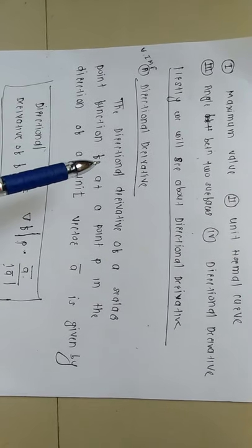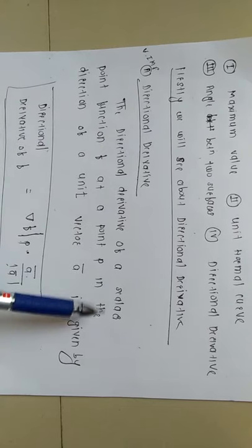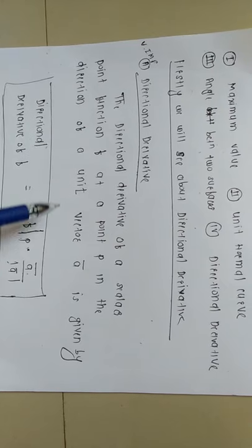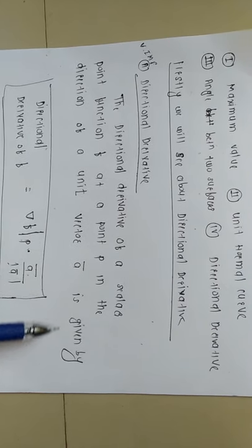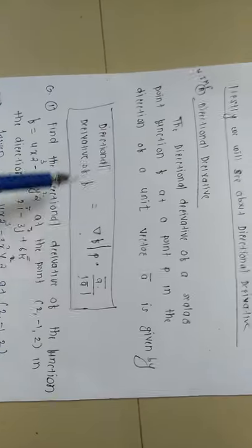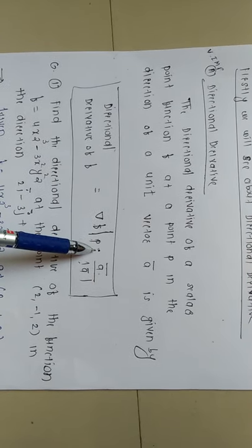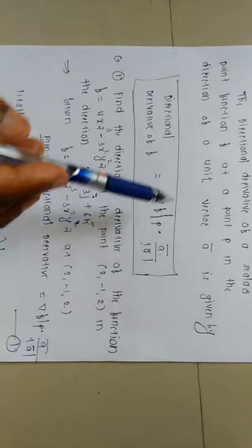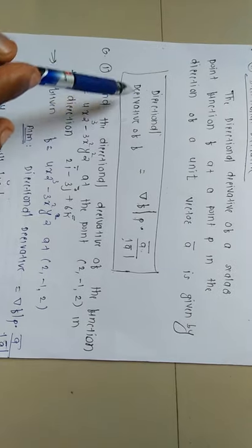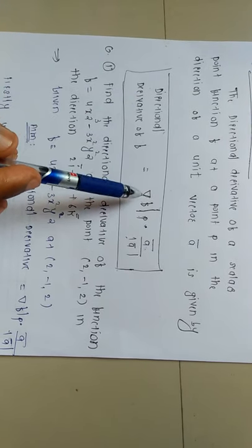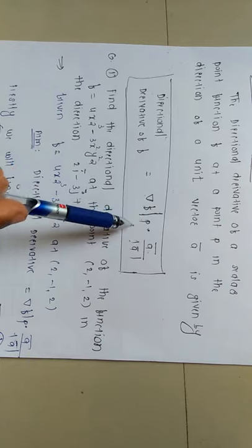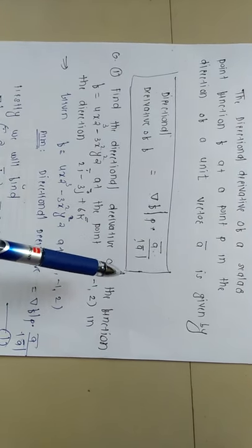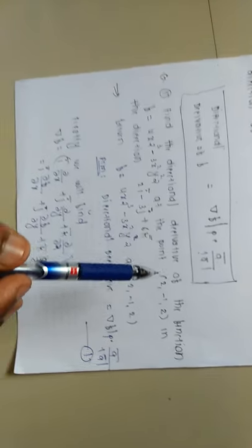The directional derivative of a scalar point function f at a point P in the direction of a unit vector a-bar is given by del phi at point P dot product a-bar divided by the modulus of a-bar. Remember that this concept is very important.